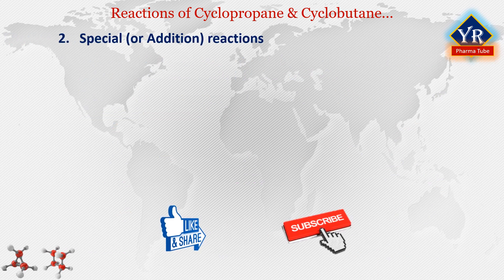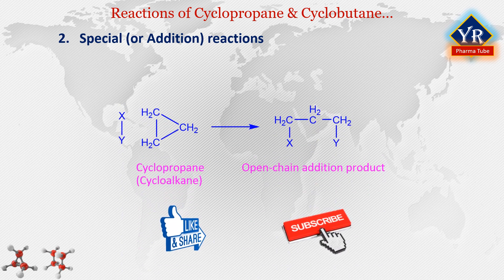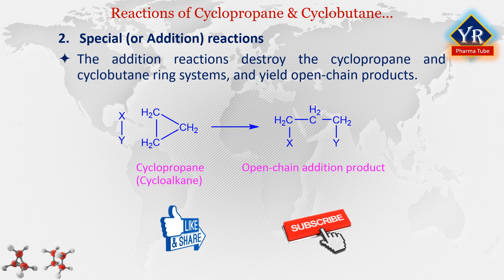Some special reactions or addition reactions of cyclopropane and cyclobutane: Besides the free radical substitution reactions that are characteristic of cycloalkanes, cyclopropane and cyclobutane undergo certain addition reactions. These addition reactions destroy the cyclopropane and cyclobutane ring systems and yield open chain products. In each of these reactions, a carbon-carbon bond is broken and the two atoms of the reagent appear at the ends of the propane chain.